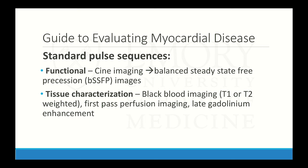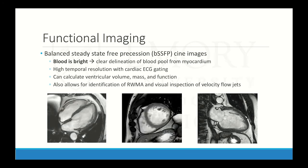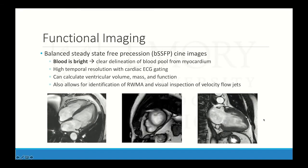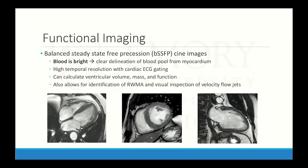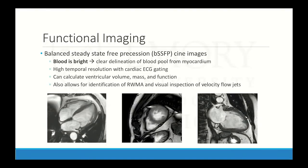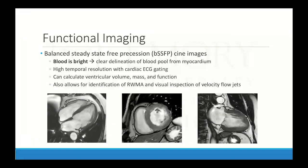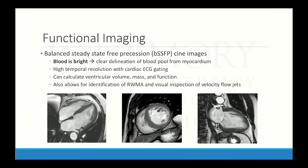If the MRI machine is our hardware, then the pulse sequences are like our software. We can use different pulse sequences to enhance different parts of our image, falling into two broad categories: functional images and tissue characterization. For functional images, the workhorse is the balanced steady-state free precession sequence — that's what gives you clear Cine images. Blood is bright with clear delineation between the blood pool and the myocardium, high temporal resolution, and images are cardiac-gated so each slice can be matched at the same part of the cardiac cycle. With these images you can calculate ventricular volume, mass, and function, identify regional wall motion abnormalities, and inspect velocity flow jets.